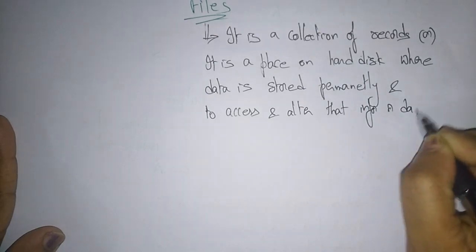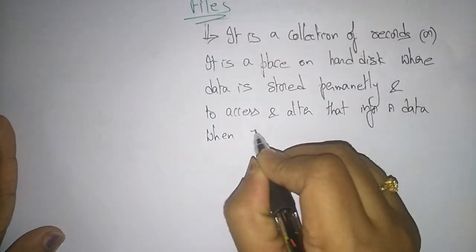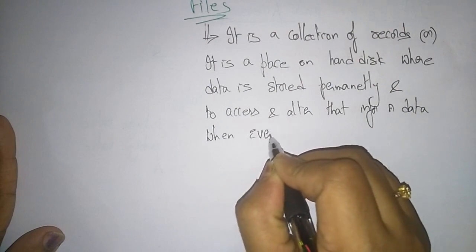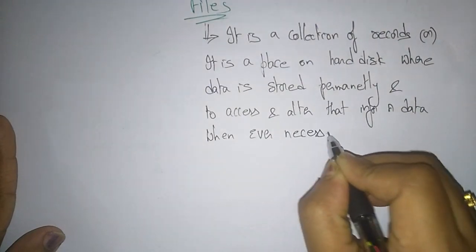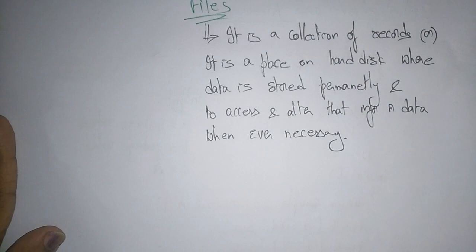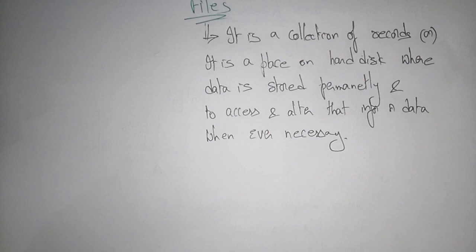So a file is nothing but it is a collection of records. It is a place on the hard disk where data is stored permanently until you delete the data — the data will be stored permanently. That is a file. Now let us see the classification of files.